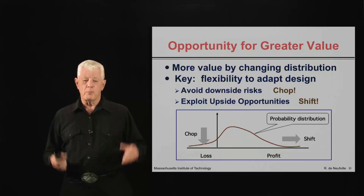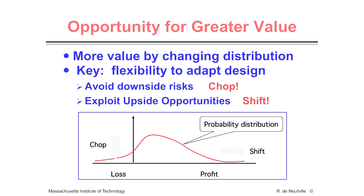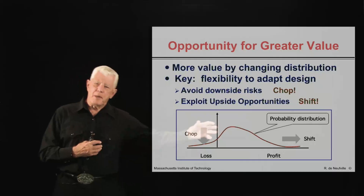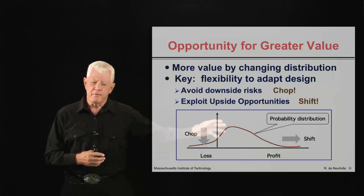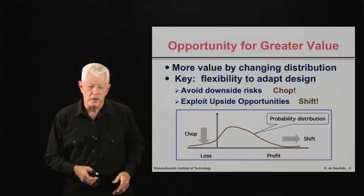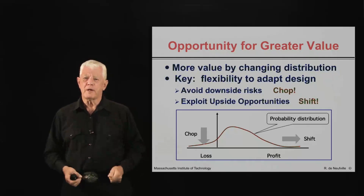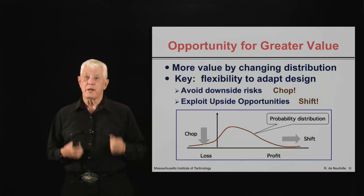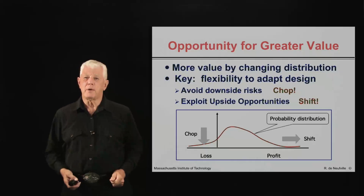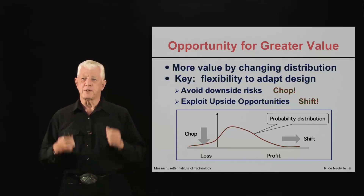In graph form, we have a curve. We try to chop the downside — do things that reduce the possibilities of really big losses — while at the same time being able to extend the upside if things go really well. That is the essence of what flexibility design attempts to do, and very often succeeds.